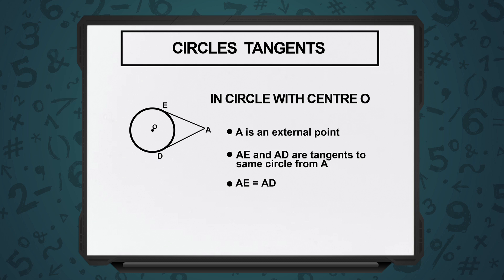The key property to remember is that a tangent drawn from the same external point to the same circle will always be equal in length.